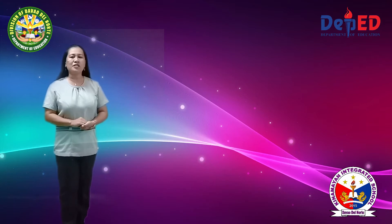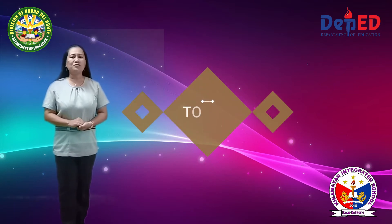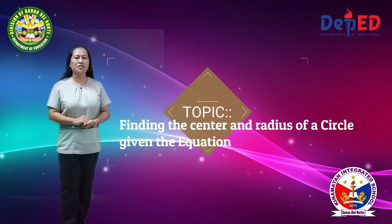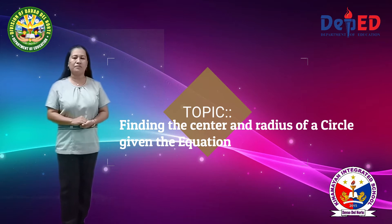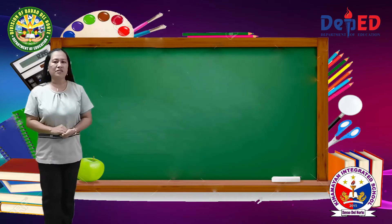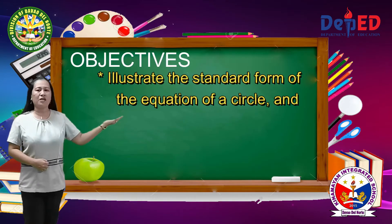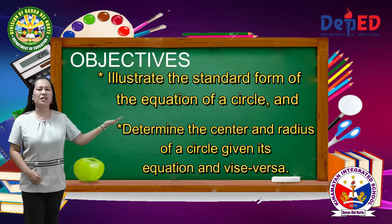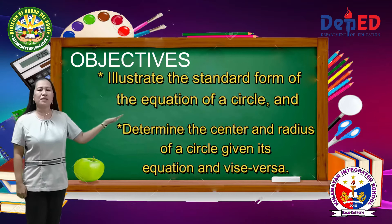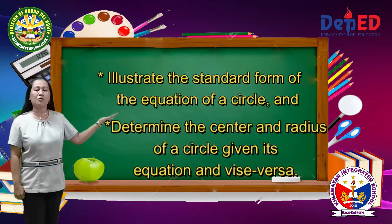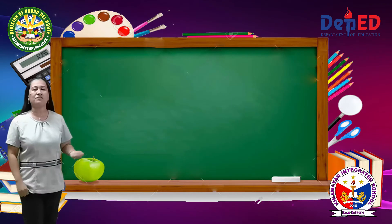Today, we are going to learn how to find the center and the radius of a circle, given the equation. Objective: Illustrate the standard form of the equation of a circle and determine the center and the radius of a circle given its equation and vice versa.